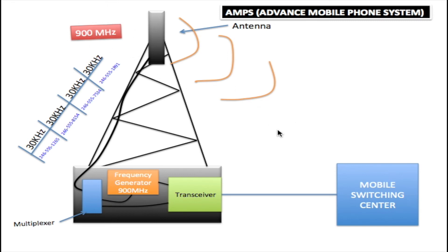Transmitting back from the phone to the base station, the phone uses a different frequency, also at 30 kilohertz, to transmit back. So it's one frequency being received from the tower and another frequency transmitting back to the tower. As you can see, 1G used full duplex communication.